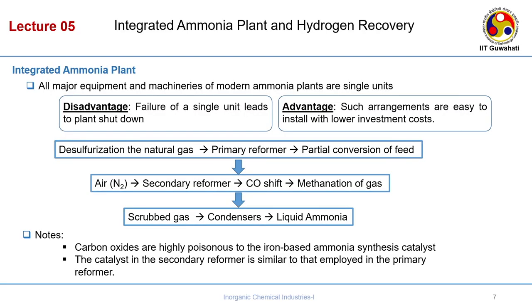We have now seen the ammonia synthesis loops. Let us discuss the integrated ammonia plant. Natural gas is chosen as fuel because it contains more hydrogen — it is methane. This methane needs to be steam reformed through primary and secondary reforming. When methane reacts with steam, it is converted to carbon monoxide, carbon dioxide, and hydrogen. The disadvantage of this series of steps is that failure of a single unit leads to plant shutdown, but the advantage is these arrangements are easy to install with lower investment cost.